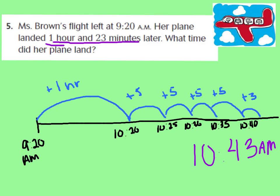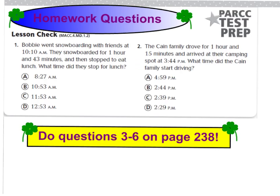I hope we got the same answers. Now let's go on to our homework problems. Bobby went snowboarding with his friends at 10:10 a.m. They snowboarded for 1 hour and 43 minutes and then stopped to eat lunch. What time did they stop for lunch? It looks like they need the end time for this one.